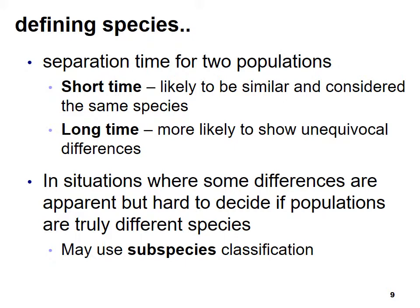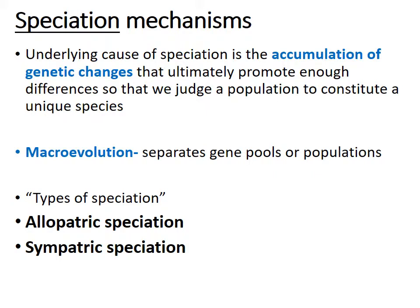The underlying cause of speciation — which is just creating a new species — is the accumulation of genetic changes that ultimately promote enough differences so we can say those are two different populations. Macroevolution leads to speciation by separating gene pools or populations. There are two kinds of speciation: allopatric speciation and sympatric speciation.